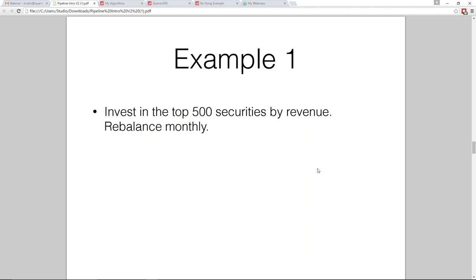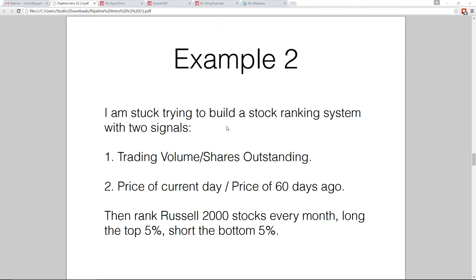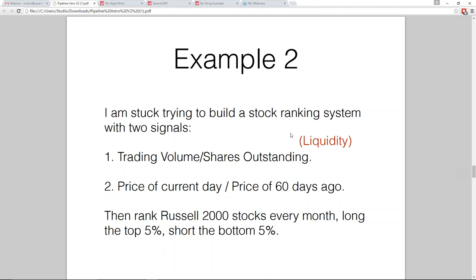The second example is a bit more complicated and one I really love. It came from a community member who posted in the forums when we had just started designing this API, and it's exactly the kind of algorithm we want to support. They were trying to build a stock ranking system with two signals: the first was trading volume over shares outstanding — a liquidity factor — and the second was the price of the current day over the price 60 days ago — a momentum factor. Then they want to rank the Russell 2000 stocks every month, longing the top 5% and shorting the bottom.